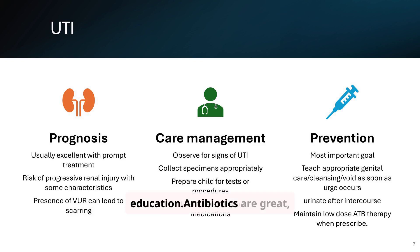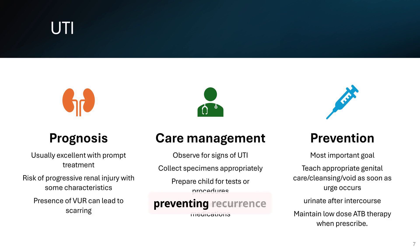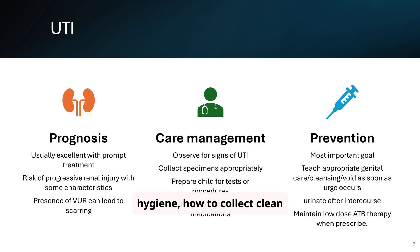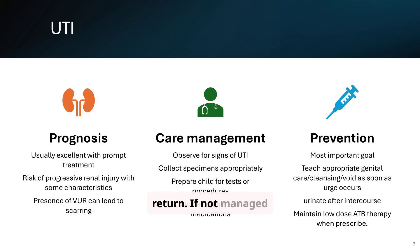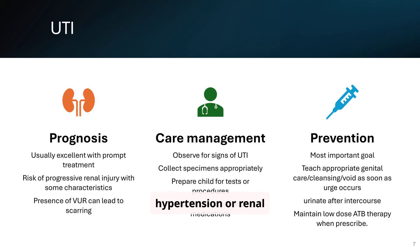The prognosis for UTIs is generally good with prompt treatment. However, be aware of the risk of renal injury, especially with VUR. Care management involves careful observation, proper specimen collection, and thorough parent education. Antibiotics are great, but the real job is preventing recurrence and catching VUR early. Teach parents about hygiene, how to collect clean urine samples, and when to return. If not managed well, scarring can occur and lead to hypertension or renal failure.